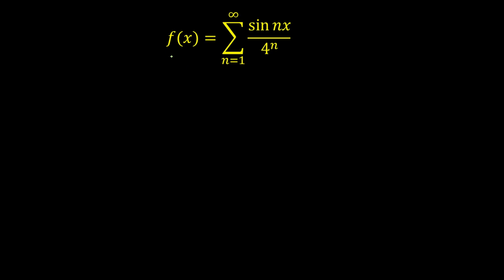The first thing I'm going to do here is simplify f of x, because our original objective is to integrate the function f of x with respect to x from 0 to pi. First we need to simplify this summation of the series, that is sin(nx) upon 4 raised to the power of n, where the summation varies from n equals 1 to infinity.